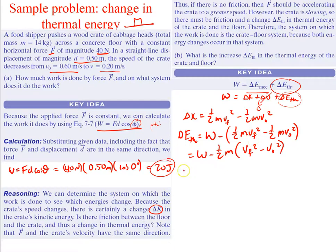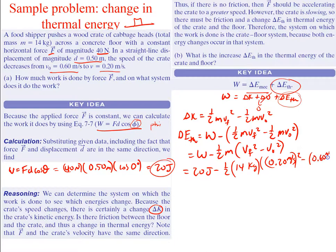Plugging in numbers: 20 joules minus one-half times 14 kilograms times (0.20 meters per second squared minus 0.60 meters per second squared). Solving this out, you get 22.2 joules. So you end up with 22.2 joules of thermal energy, meaning a lot of the energy the object had was being turned into thermal energy while it was being pushed.